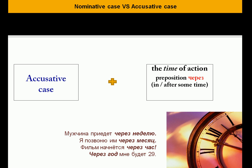You would also use the accusative case form when talking about the time of an action with the preposition через, which can be translated as 'in' or 'after' some time. Мужчина приедет через неделю — the man will arrive in a week. Я позвоню им через месяц — I will call them in a month. Фильм начнется через час — the movie will start in an hour. Через год мне будет двадцать девять — in a year, I'll be twenty-nine.